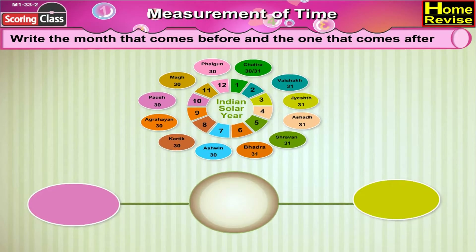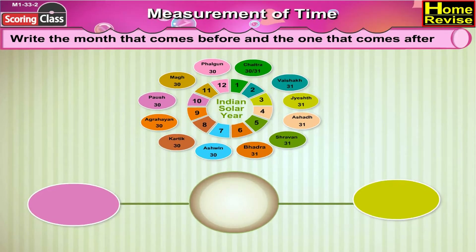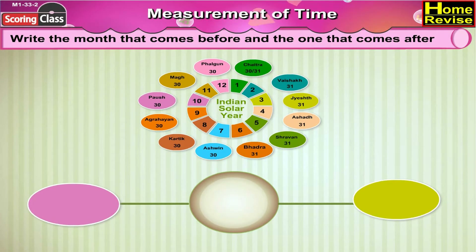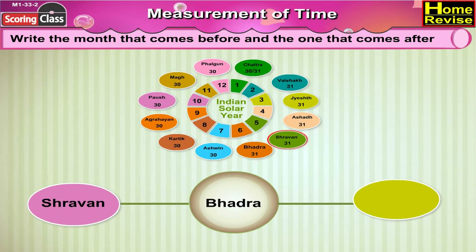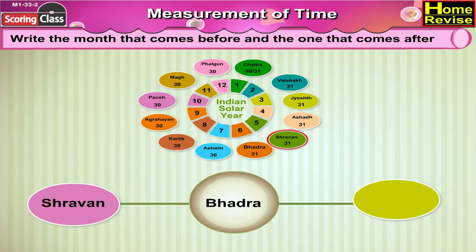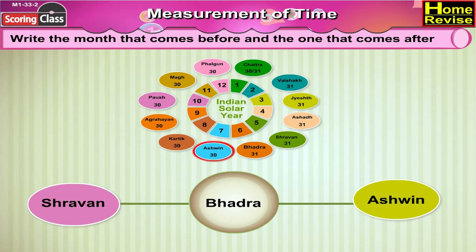Write the month that comes before and the one that comes after Bhadra. Before Bhadra comes Shravan, and after Bhadra there is Ashwin.